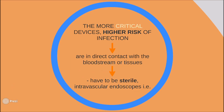It's important to classify medical devices because some are more critical than others. The most critical devices, which have the highest risk of infection, are devices in direct contact with the bloodstream or tissues, so they must be sterile — examples include laparoscopes, arthroscopes, and intravascular endoscopes.